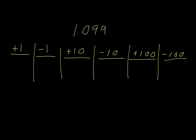I'd like you to give this question a try now — this is a four-digit number. Be careful when you're subtracting 100 from this number because you're going to cross over the boundary, so it's no longer going to be a four-digit number; it'll be a three-digit number. And when you are adding 1, be careful because more than one digit is going to change when you do that, as with the tens. Pause the video and we'll see how you do.